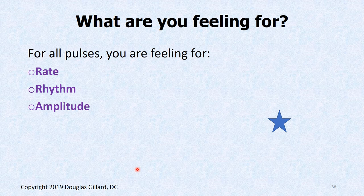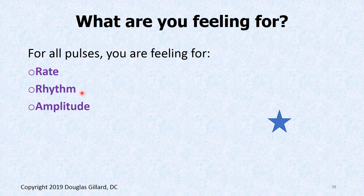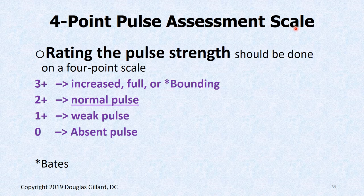Now for palpation: what are you feeling for? Rate, rhythm, and amplitude. How fast is the pulse going? Is it a normal pulse? We'll talk about pulsus paradoxus — where you feel a pulse but every time the patient breathes in, it disappears. And the amplitude: is it pounding when the patient should be resting? You can assign a scale: normal is plus-two, weak is plus-one, and plus-three is called a bounding pulse.